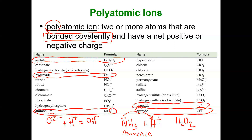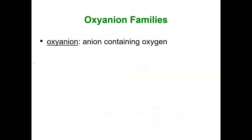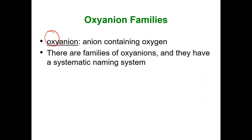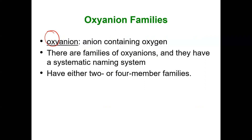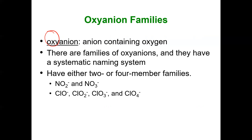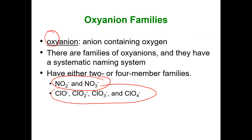Now let's talk about what an oxyanion is — it's basically a polyatomic ion with oxygen attached. There are two families of oxyanions: they either have two or four members. For example, nitrite and nitrate form a two-member family. Hypochlorite, chlorite, chlorate, and perchlorate form a four-member family. Sometimes the oxyanions come in families of two or four members.